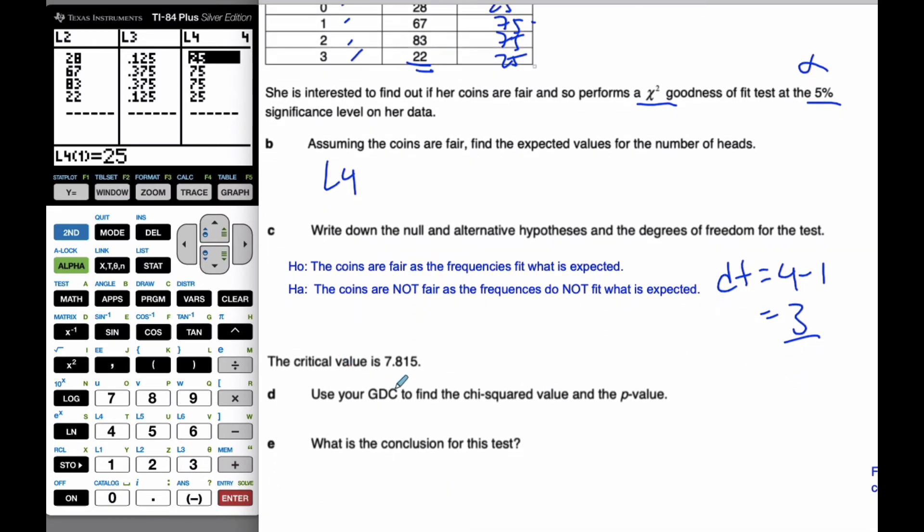My critical value is 7.815. And so, if I think about my graph, chi-square graphs always look kind of like this. And sometimes this part is a little bit more steeper and tighter in here. But what we're saying is that there's somewhere in here, there's 7.815. If my critical value lands in here,